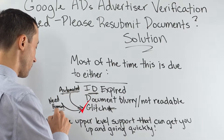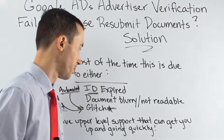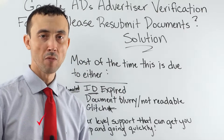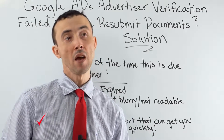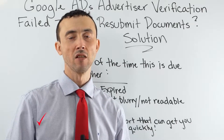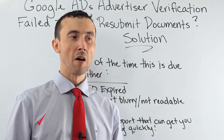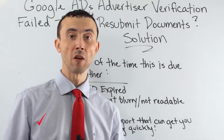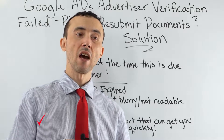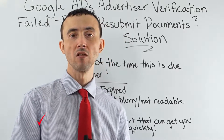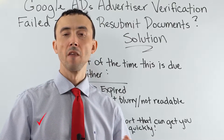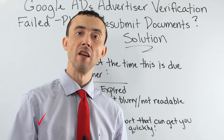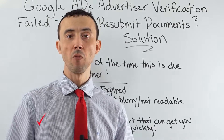This system is automated. You need a human to review it if you have no other documents to submit. We have upper-level support that can get you up and going quickly. If you're losing a thousand dollars a day because your ads are shut down, don't mess around anymore. Reach out and we'll fix it. We're not going to be able to fix it overnight most of the time, but it should be fixed within the next seven days — we get the right documents, contact support, and then you're up and going.